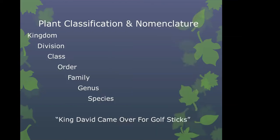Let's talk a little about plant classification and nomenclature. Many of you will remember from basic biology: King David came over for good spaghetti — kingdom, division, class, order, family, genus, species. Botanists use 'division' instead of 'phylum,' which is what zoologists use. So here's how that breaks down for a particular plant: we're in the domain Eukarya, meaning they have a true nucleus — a membrane-enclosed organelle containing their genetic material, the DNA. We're in the plant kingdom, the sub-kingdom of vascular plants — meaning a plant with plumbing, with xylem and phloem.